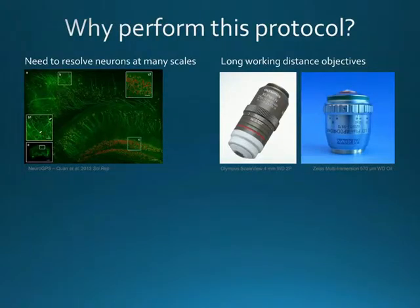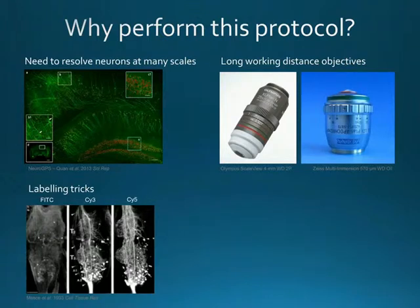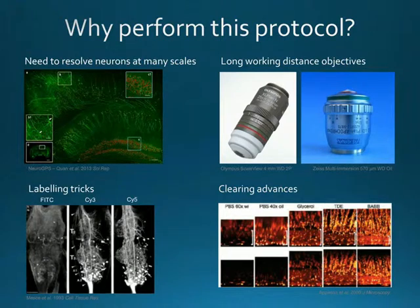One of the things that made this protocol possible is the long working distance objectives that came out. At the time we made this protocol, there was a multi-immersion objective from Zeiss that allowed imaging with oil immersion up to 500 to 170 microns. A scale objective also came out allowing imaging up to 4 millimeters with scale clearing. There were also techniques to improve signal-to-noise by shifting excitation and emission wavelengths further into the red, and new chemicals like thiodiethanol (TDE) became available for improved clearing.